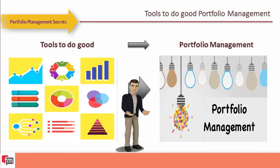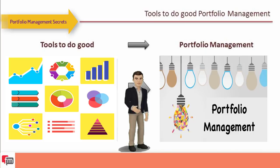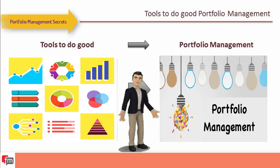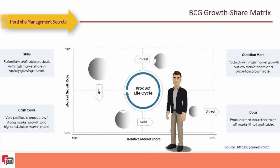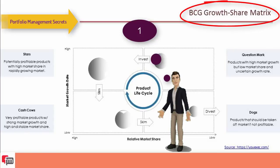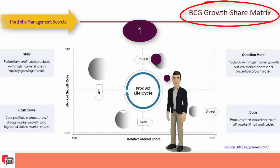After discussing what, who, why, and where to do portfolio, this part of the session focuses on how to do portfolio. To do portfolio management well, you need tools. The first tool is the BCG growth-share matrix, a framework created by Boston Consulting Group to evaluate the strategic position of a business brand portfolio and its potential, classifying the business portfolio into four categories based on industry.